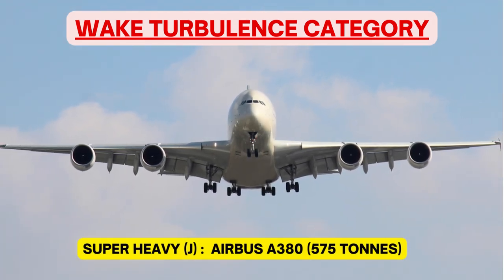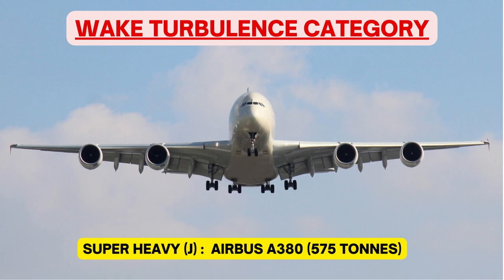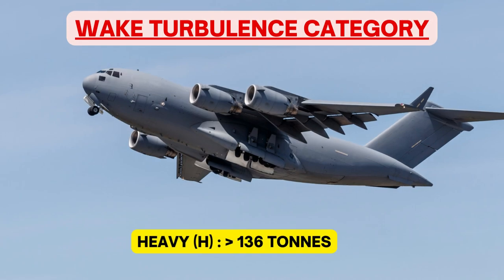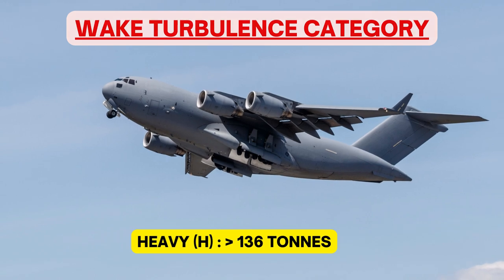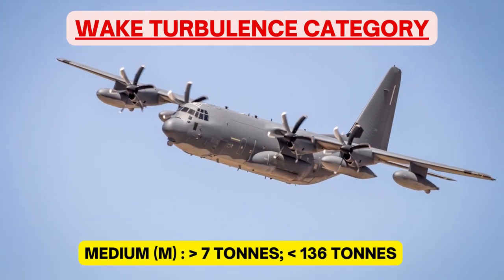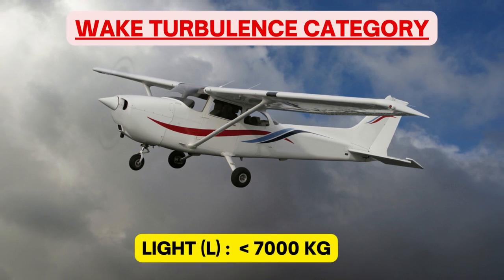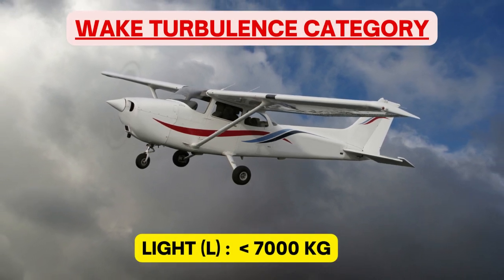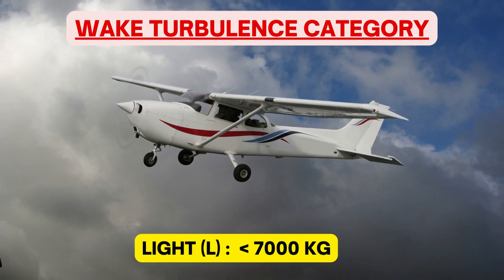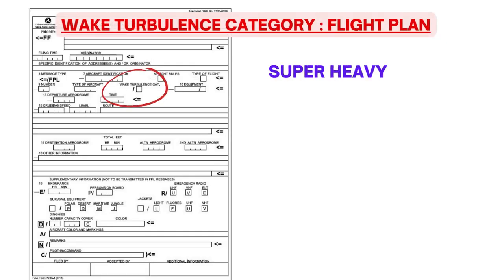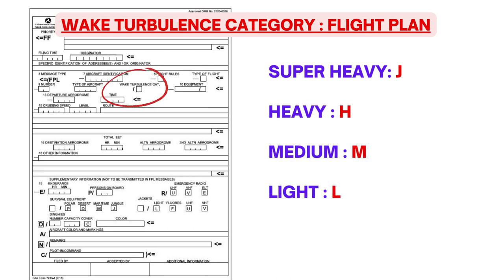There are 4 categories of wake turbulence. The first is Super Heavy — as of now, the only aircraft in this category is the Airbus A380, weighing 575 tons. Next is Heavy, then Medium, and finally Light for aircraft less than 7,000 kg. When filing a flight plan, you must mention the wake turbulence category using the codes: J for Super, H for Heavy, M for Medium, and L for Light. Wake turbulence from Super Heavy and Heavy aircraft would be the most dangerous.